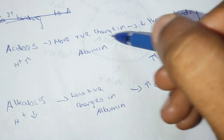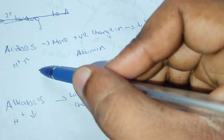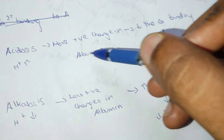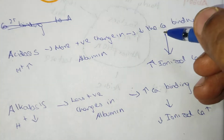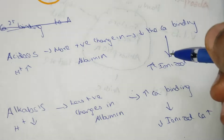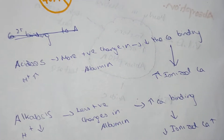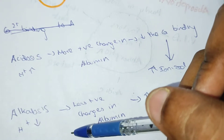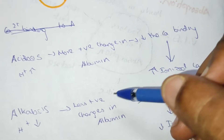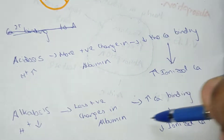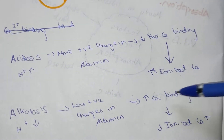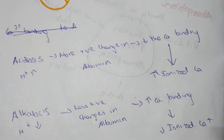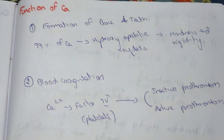In acidosis, there is more H⁺ concentration, so there is more positive charge on albumin, which decreases calcium binding, resulting in increased ionized calcium. In alkalosis, H⁺ concentration decreases, there is less positive charge on albumin, so calcium binding increases and ionized calcium level decreases.